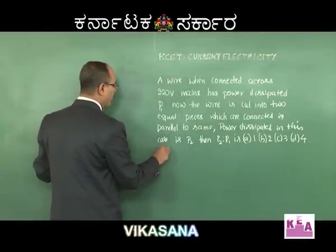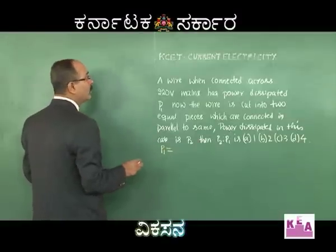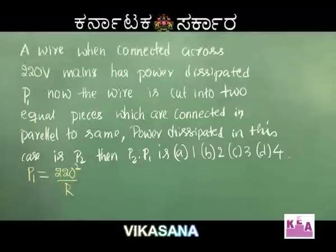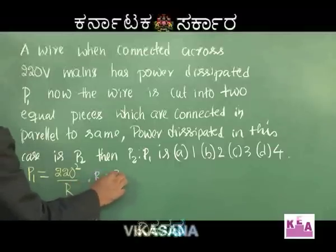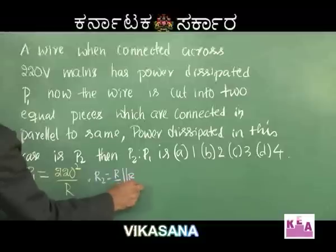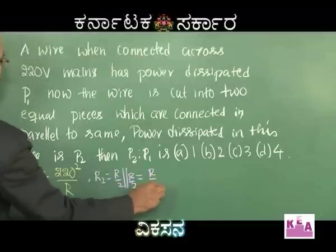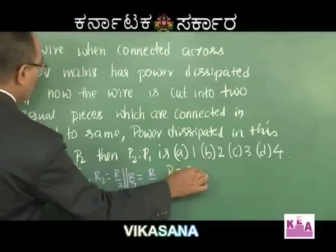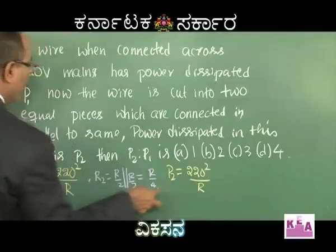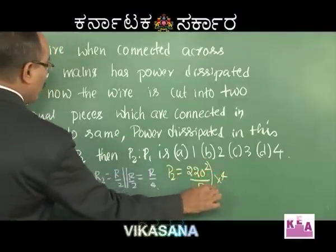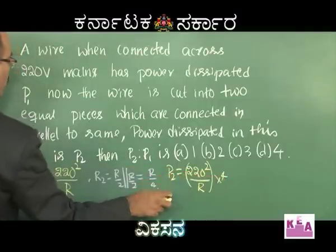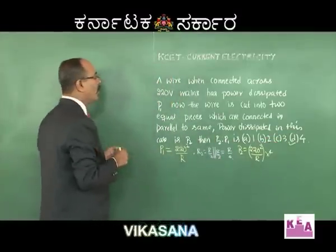Mathematically: P1 = (220)² / R. The new resistance R2 = R/2 parallel R/2 = R/4. P2 = (220)² / (R/4) = 4 × (220)² / R = 4 × P1. Therefore P2 / P1 = 4, option D is correct. See how simple the question is.